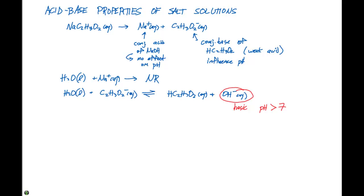But what if we have a salt solution like NH4C2H3O2? That salt is going to be in equilibrium with NH4 plus and C2H3O2 minus. Here, we have the conjugate acid of a weak base, and here we have the conjugate base of a weak acid.